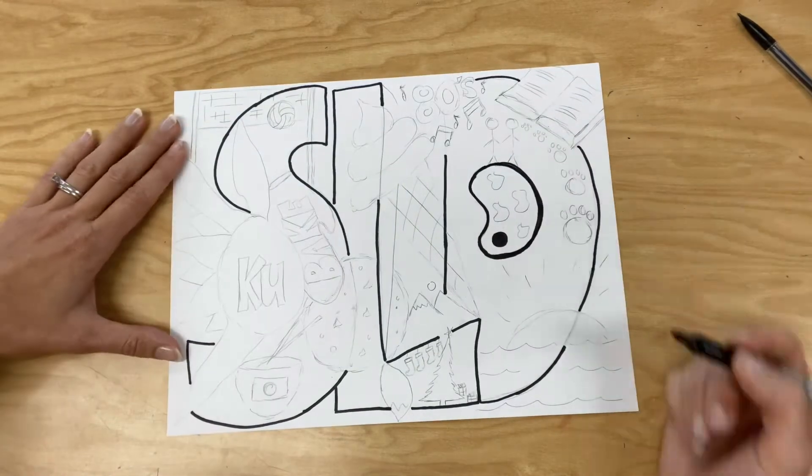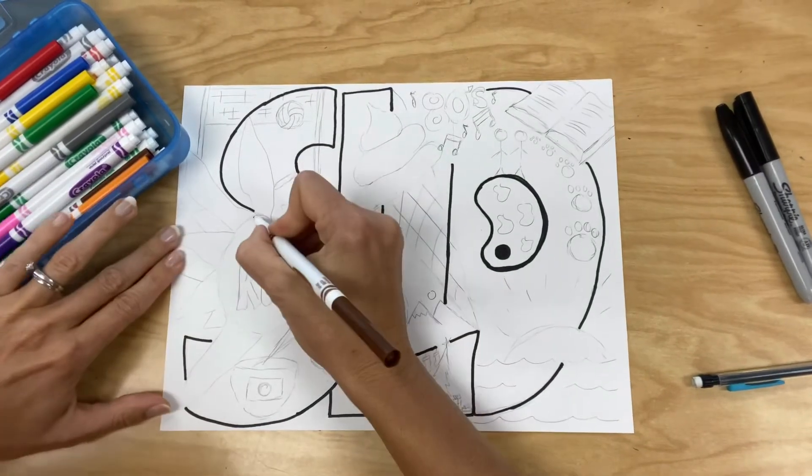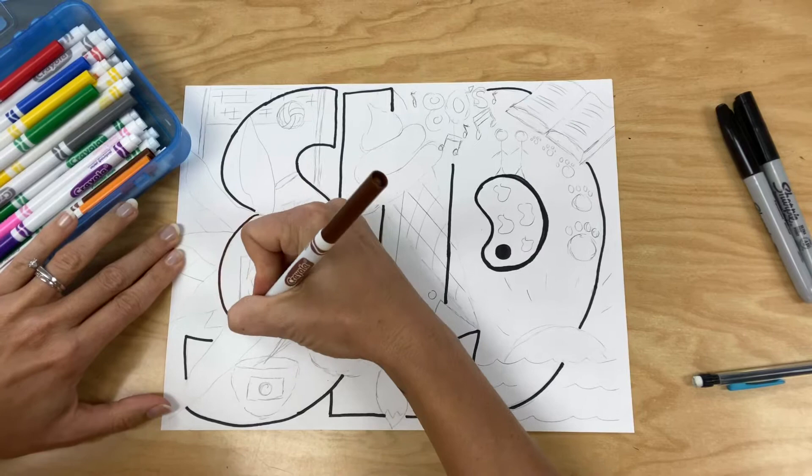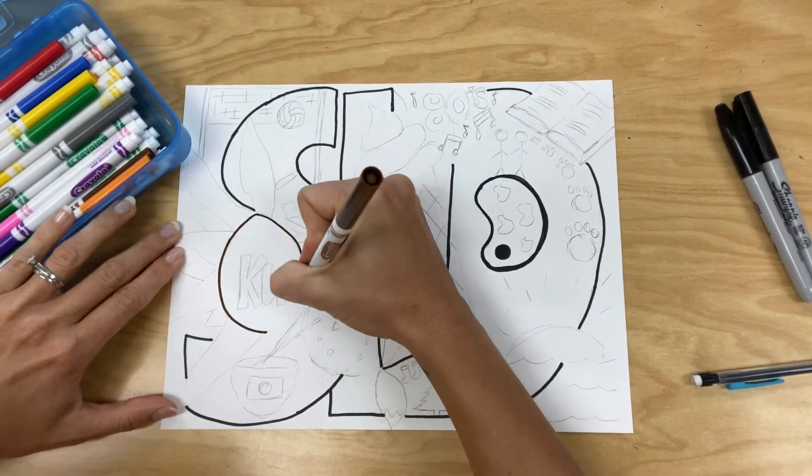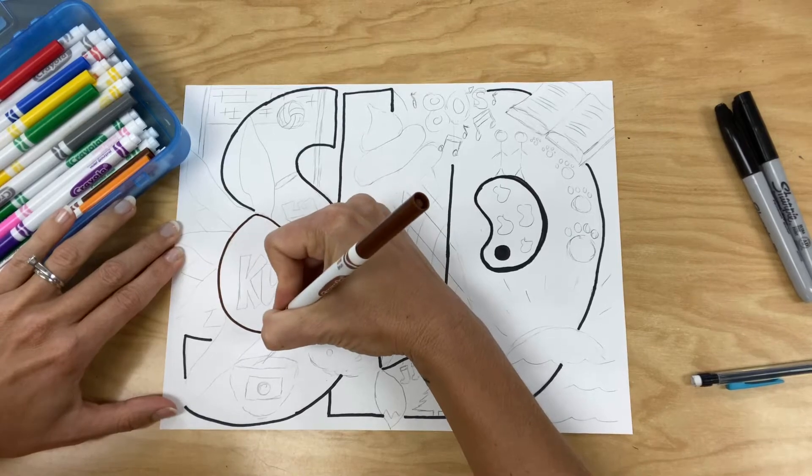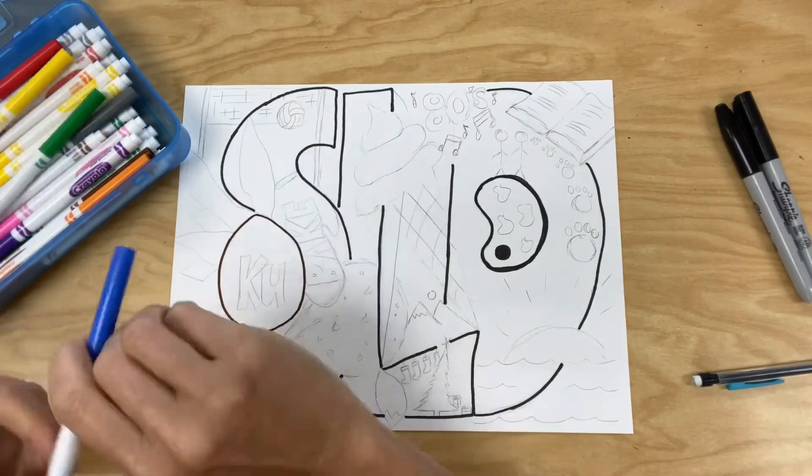After you have neatly outlined your initials in black, leaving space where imagery overlaps, then you're going to take colored markers and outline the imagery using colored markers. Skinny markers work best, using the colors of the object that they are.